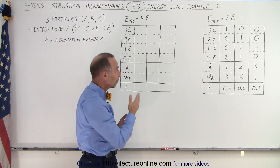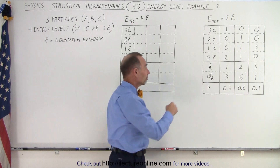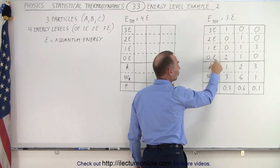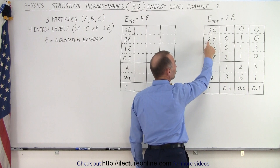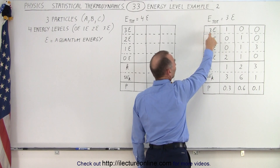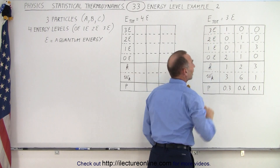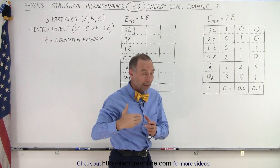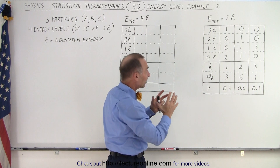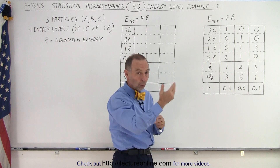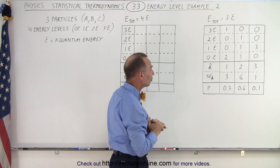We had three particles, we called them A, B, and C, and four energy levels, where the first energy level had zero quantum energies, the second one had one quantum energy, the third level had two quantum energies, and the fourth level had three quantum energies. We were constrained that the total energy of the three particles — A, B, and C, which were, by the way, distinguishable — had to be a total of three quantum energies.